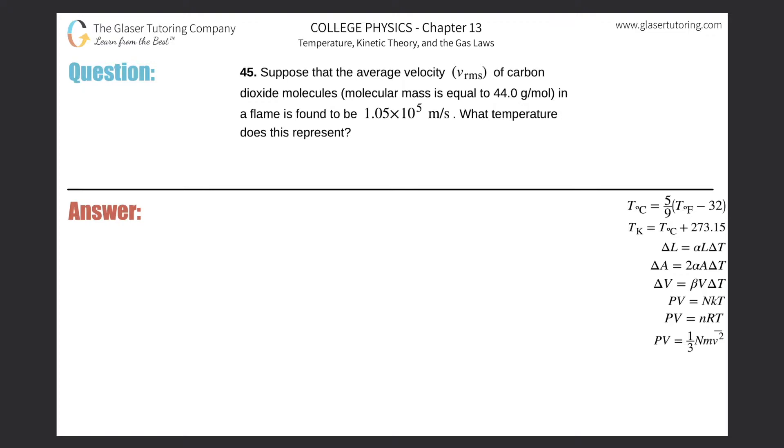Number 45: Suppose that the average velocity, or the root mean square velocity, of carbon dioxide molecules (which have a molecular mass equal to 44 grams per mole) in a flame is found to be 1.05 times 10^5 meters per second. What temperature does this represent? What we need to do is find a formula that will relate temperature to average velocity or root mean square velocity.